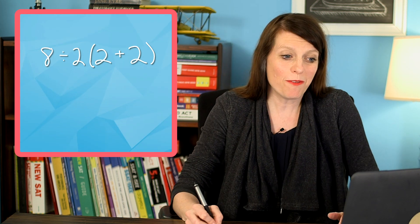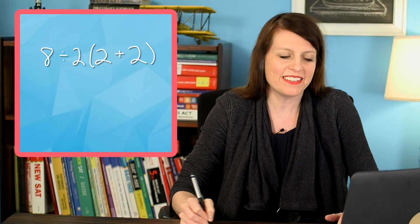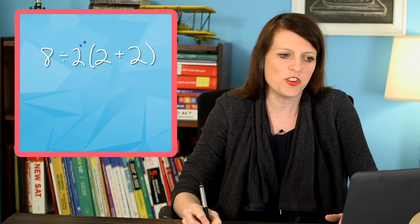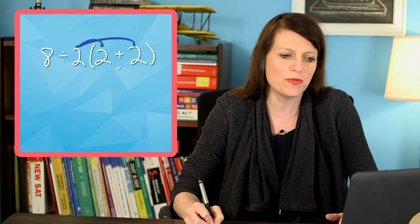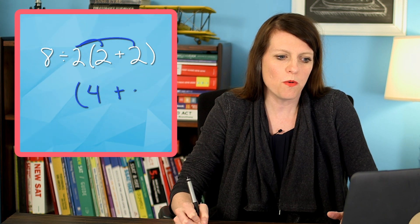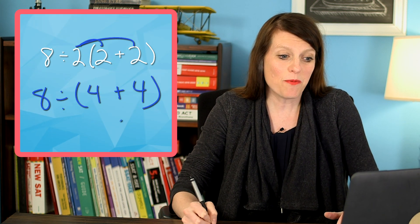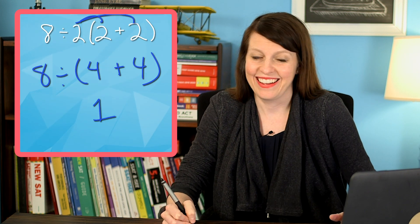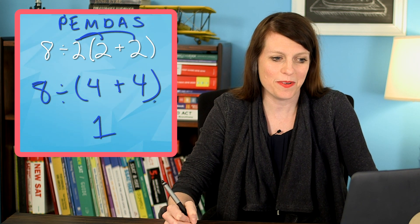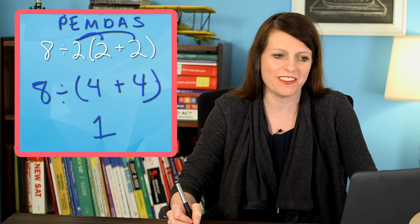But what if you wanted to use the distributive property? The distributive property says if you've got anything next to your brackets, you should be able to distribute — making this 4 plus 4, and then you'd get 1. That would be a way to solve this with the distributive property, but then you get a different answer.